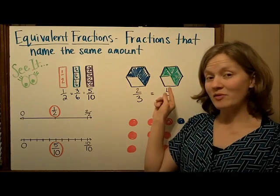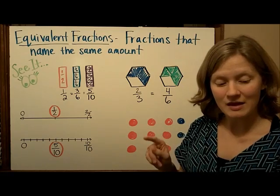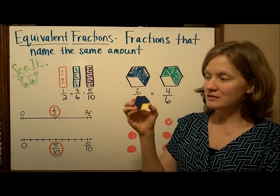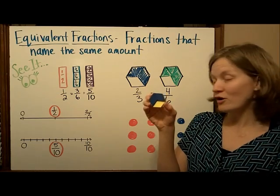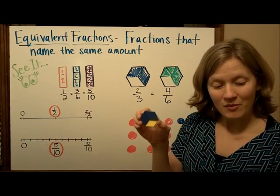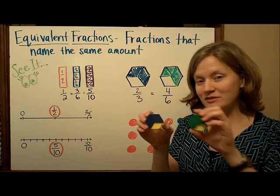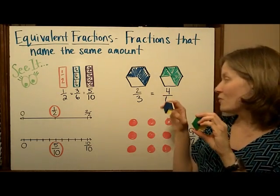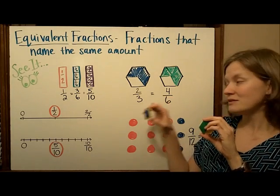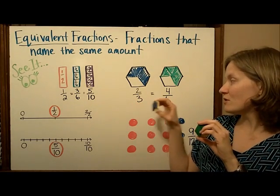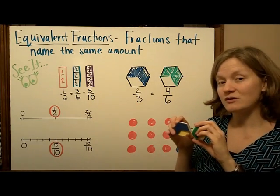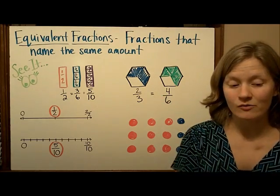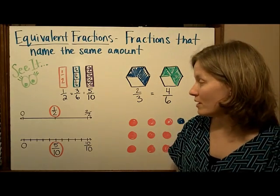When we look at pattern block pieces, we know that two of the blue pieces represent two-thirds, but we can also cover the same amount of space with four green pieces, which we call four-sixths. So two-thirds and four-sixths are equivalent fractions because they name the same amount or cover the same part of the whole.